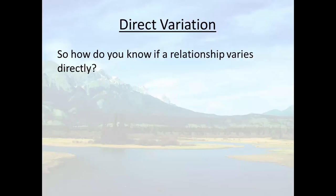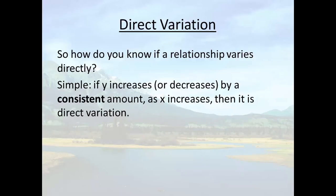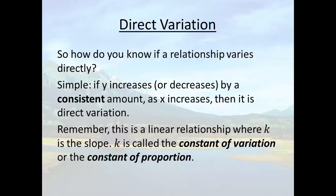So, how do we know if a relationship varies directly? It's pretty simple. If y increases or decreases by a consistent amount as x increases, then it's direct variation. Remember that it's a linear relationship. In this particular situation, k is basically the slope. So, you want a consistent slope. It's the same change in y versus the same change in x. And we call that constant k, the constant of variation. Or it's called the constant of proportion.